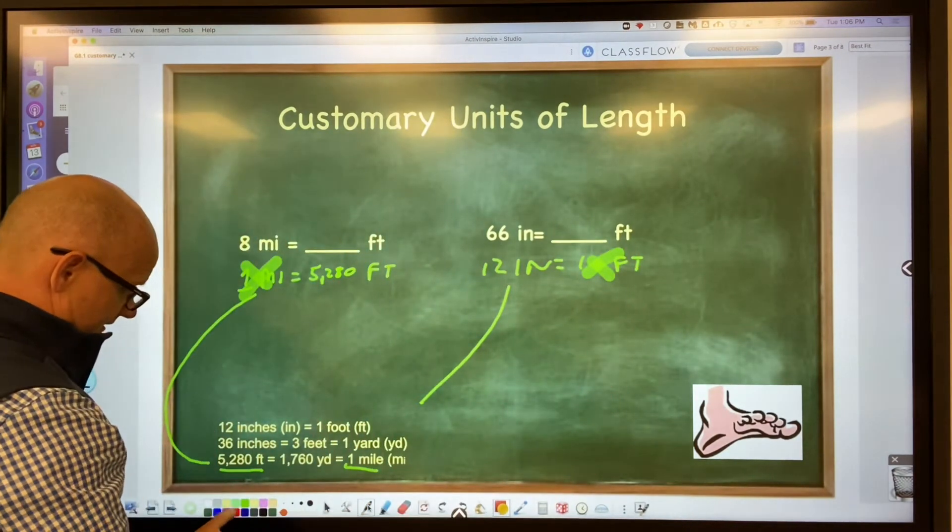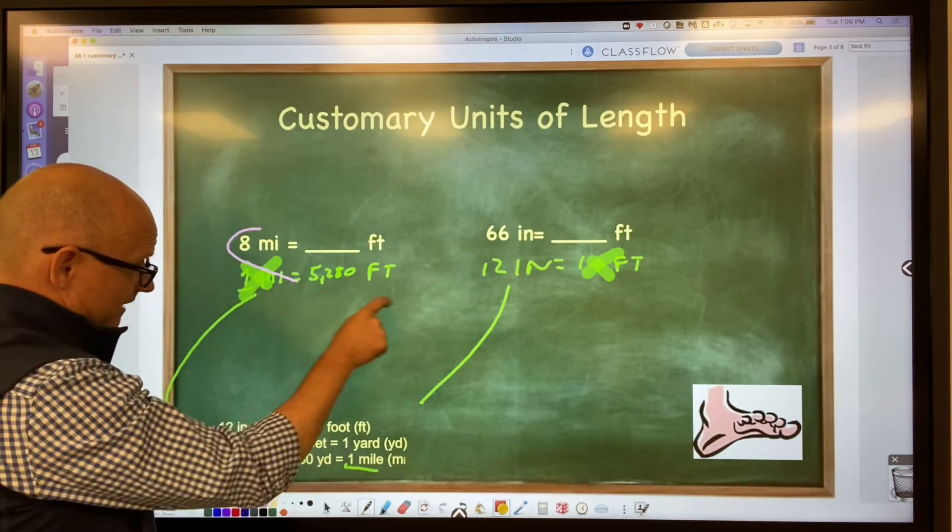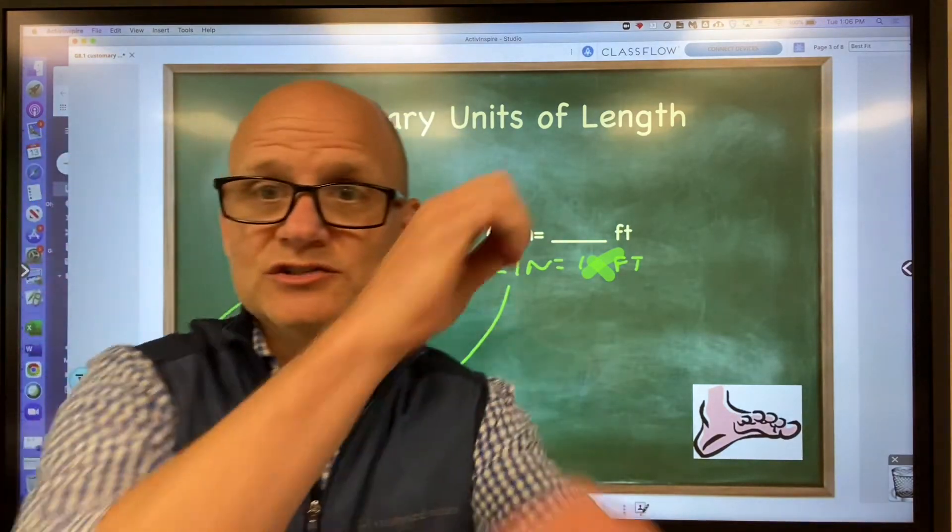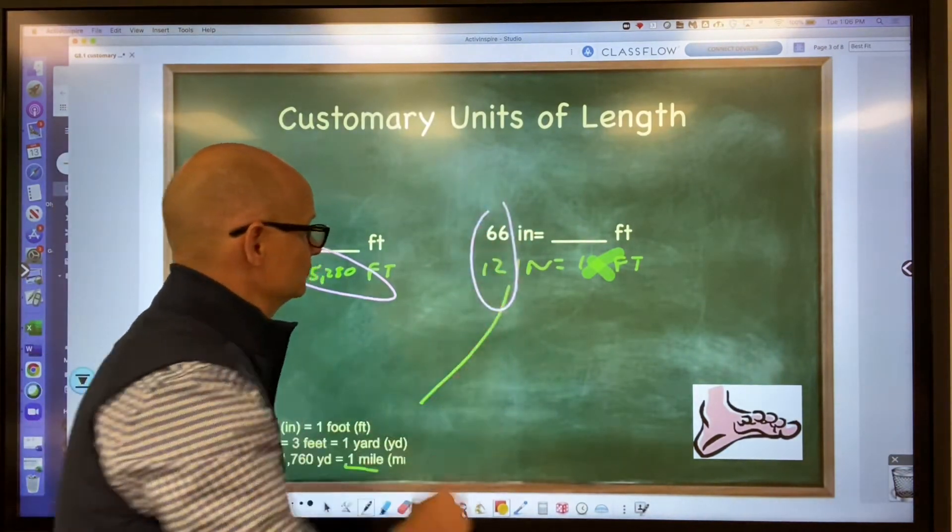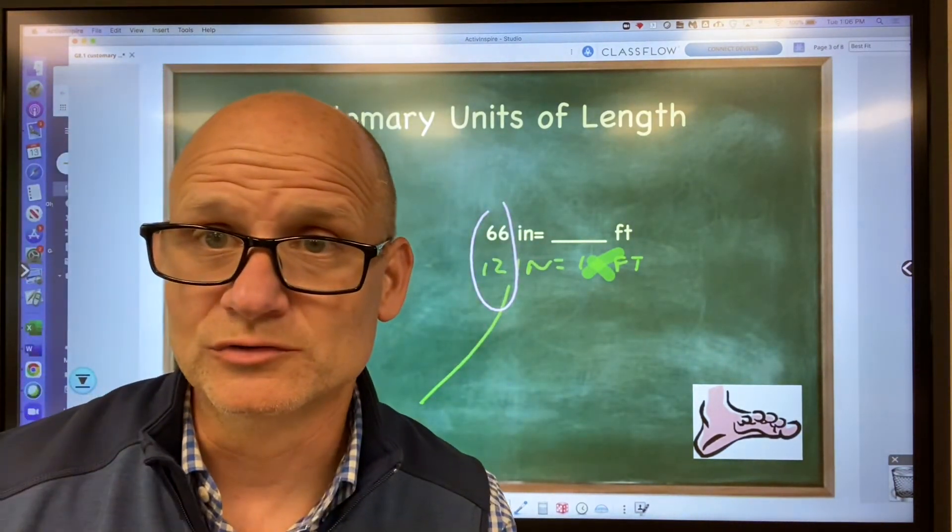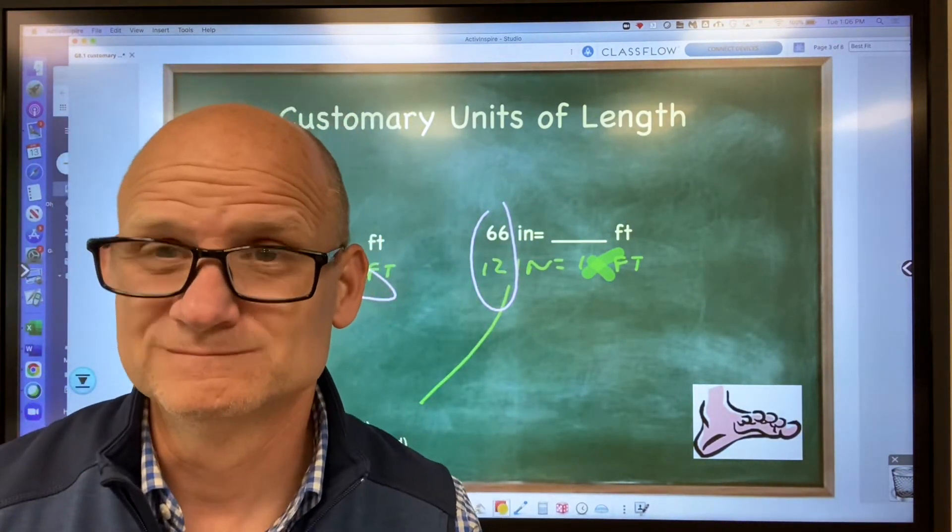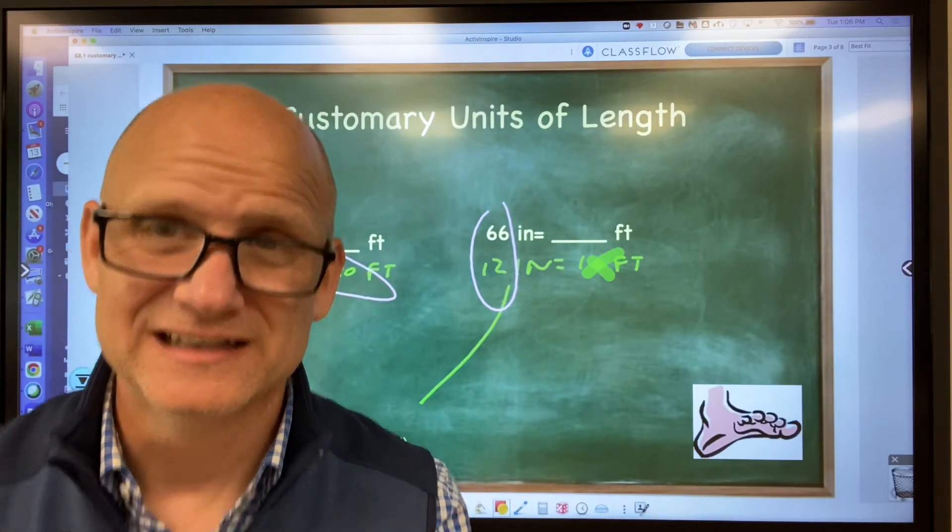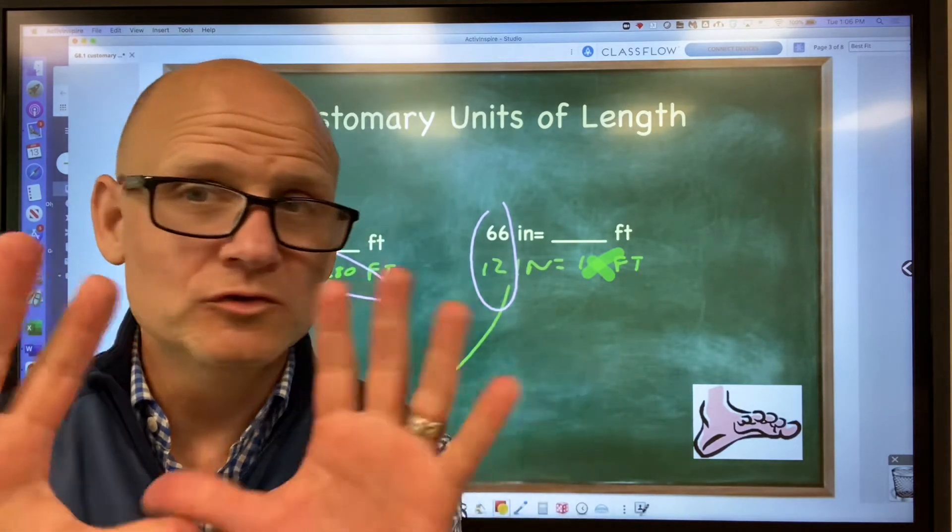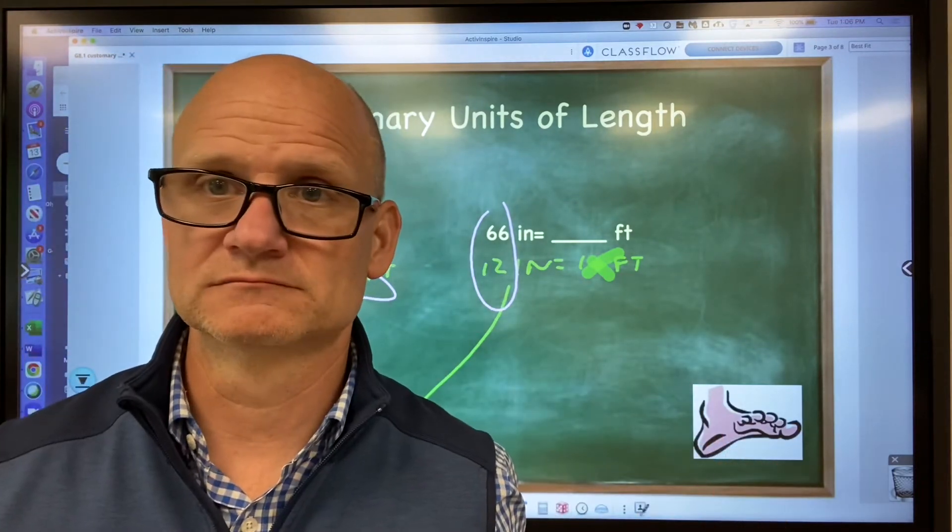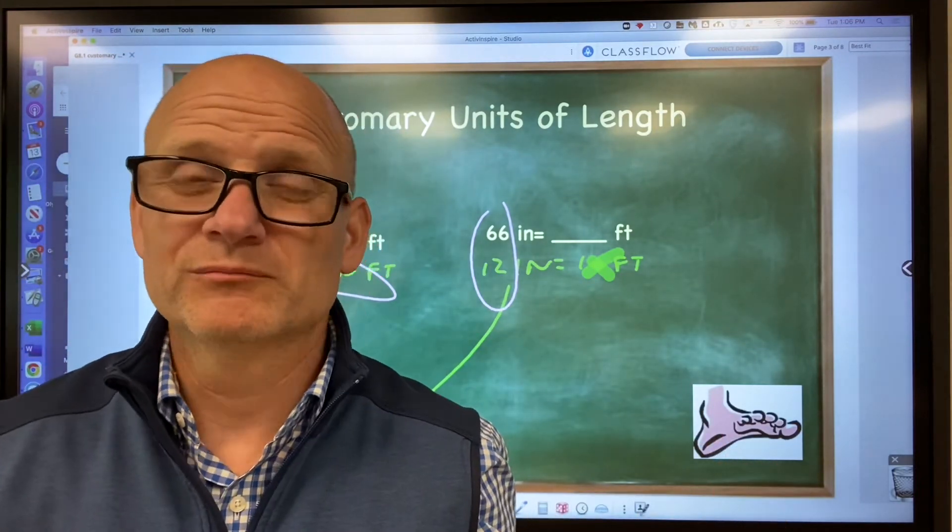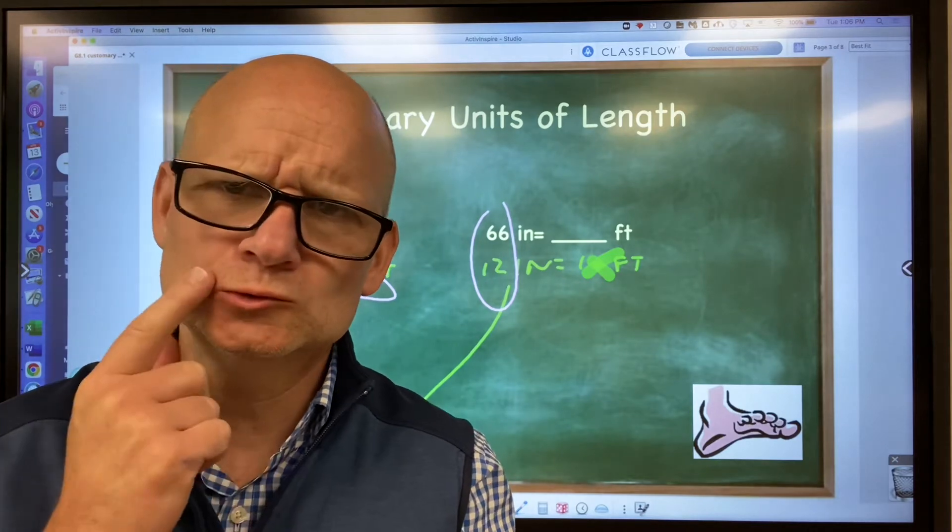Now here's what you look at. You ignore the one. If it goes this way, guess what you do? Multiply. And if it goes this way, guess what you do? Divide. That's how you know. Now, if you already know whether to multiply or divide, don't waste your time on this. Just do it.